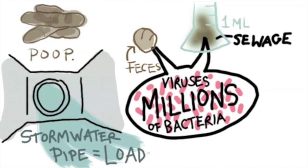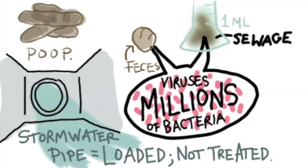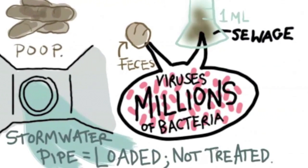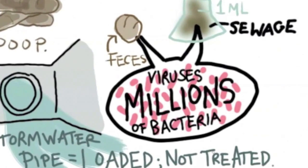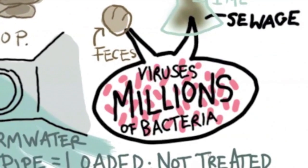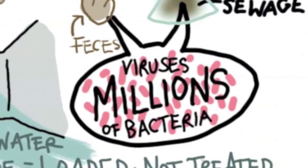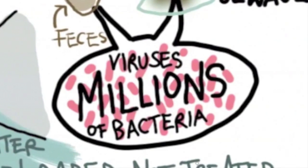Once that material gets into water, dilution typically can be the solution. But when you're in an area that has a chronic source of that material — like a sewage treatment plant or a stormwater flood pipe — you're loading as much material into the water as, in some cases more than, it can handle as far as dilution.